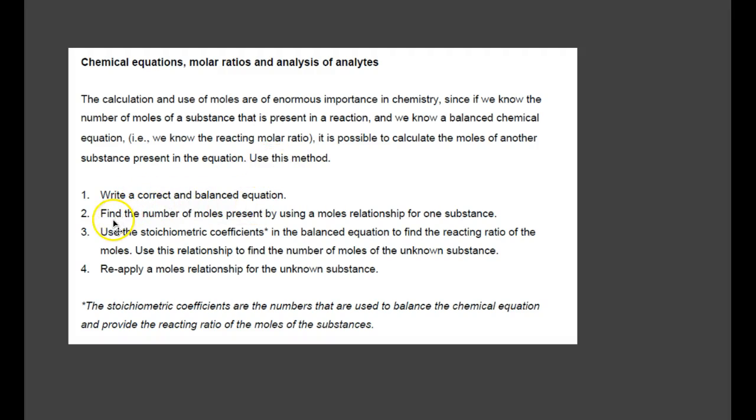Use this method: Write a correct and balanced equation. Find the number of moles present by using a mole relationship for one substance. Use the stoichiometric coefficients, the coefficients in front of the compounds or atoms, in the balanced equation to find the reaction ratio of moles. Use this relationship to find the number of moles of the unknown substance. Reapply a moles relationship for the unknown substance. The stoichiometric coefficients provide the reacting ratio of the moles of a substance. In essence, it's stoichiometry.